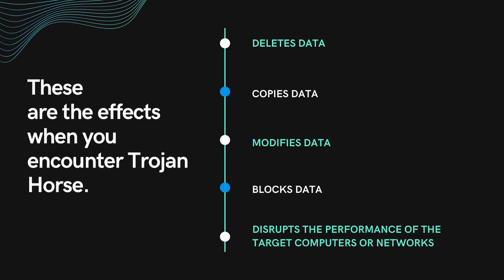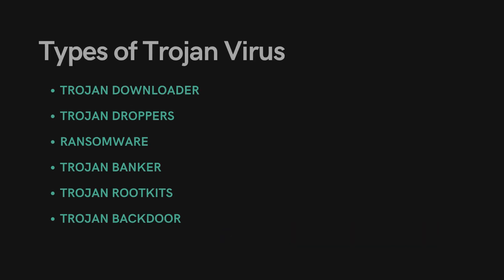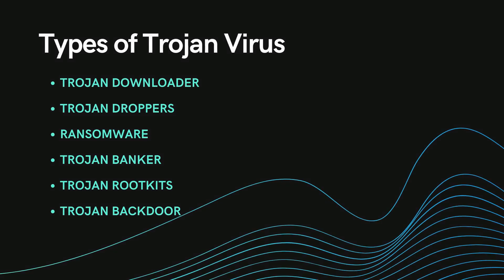These are the effects when you encounter a Trojan horse: it deletes data, copies data, modifies data, blocks data, and disrupts the performance of the target computers or networks.